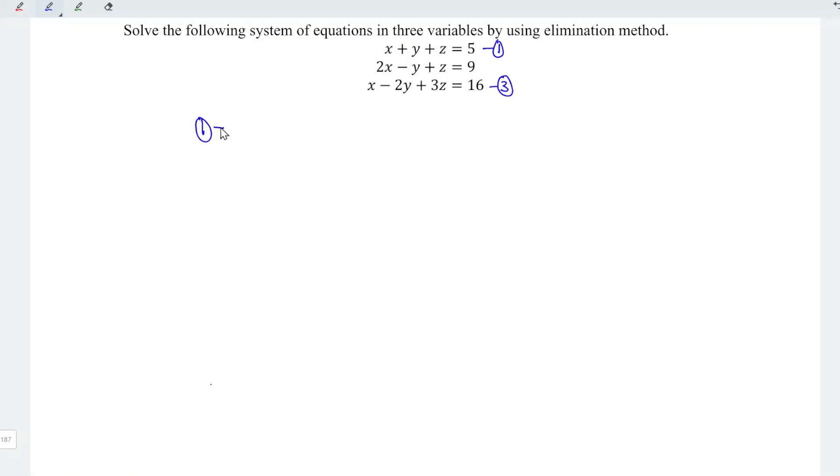I will then take equation 1 plus equation 3. So we should have 1x plus 1x, which is equal to 2x. 1y minus 2y, which is equal to minus 1y or simply minus y. 1z plus 3z, which is equal to plus 4z. And this is equal to 5 plus 16, which is equal to 21. And I'm going to name this as equation 4.